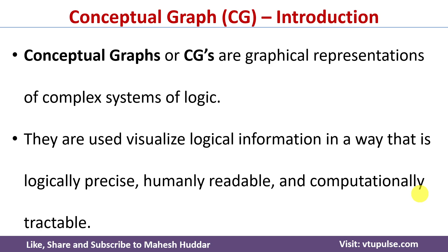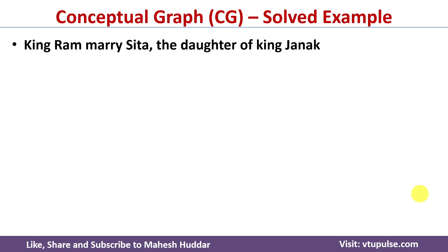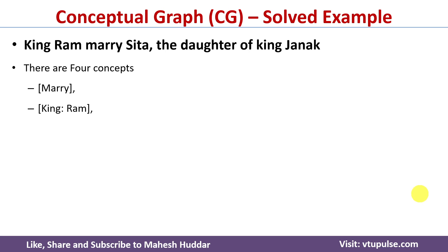In this case, we have been given the following knowledge base: King Rama married Sita, and Sita is the daughter of King Janaka. If you notice this knowledge base carefully, we have four concepts. The first concept is Mary, and the second concept is King Rama.